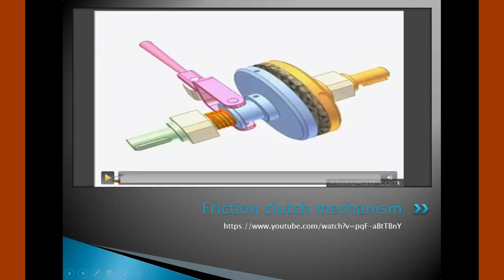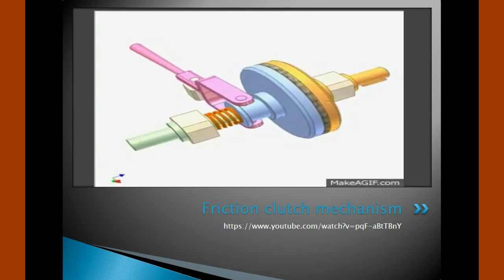To understand how a clutch works, it helps to know a little bit about friction, which is a measure of how hard it is to slide one object over another. Friction is caused by the peaks and valleys that are part of every surface — even every smooth surface still has microscopic peaks and valleys. The larger these peaks and valleys are, the harder it is to slide the object. Clutches are useful devices that have two rotating shafts; one shaft is typically driven by a motor or pulley and the other drives another device. The clutch connects the two shafts so they can either be locked together and spin at the same speed, or be decoupled and spin at different speeds.